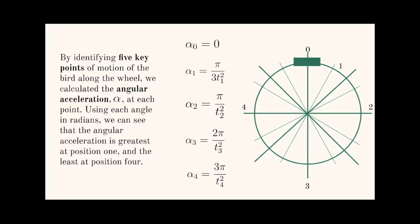We have the positions here, where α_0 = 0, α_1 = π/(3t_1²), α_2 = π/t_2², α_3 = 2π/t_3², and α_4 = 3π/t_4².